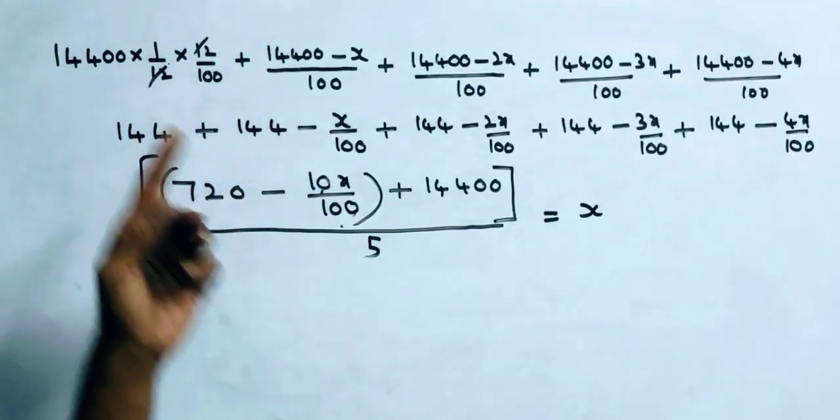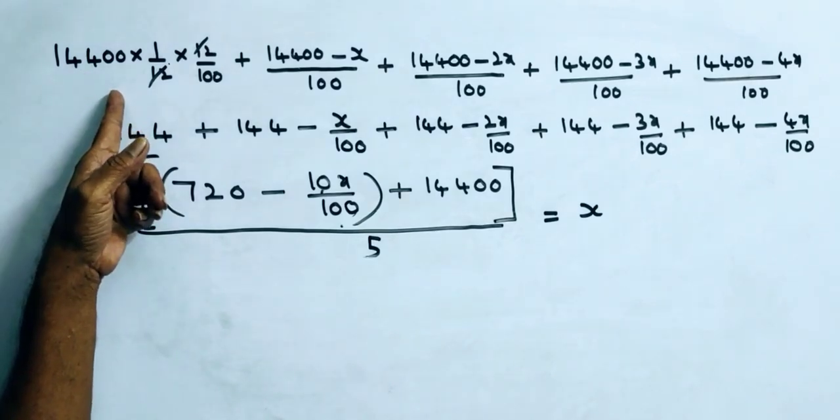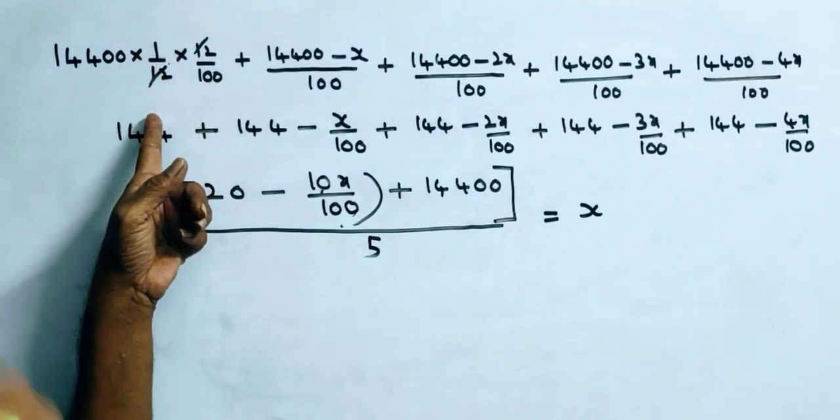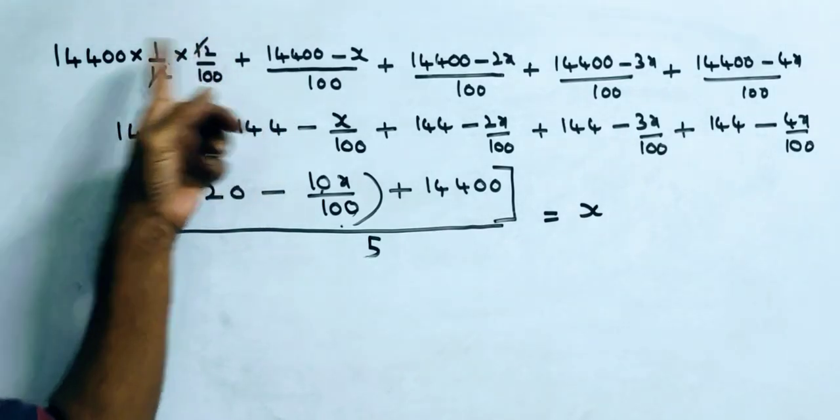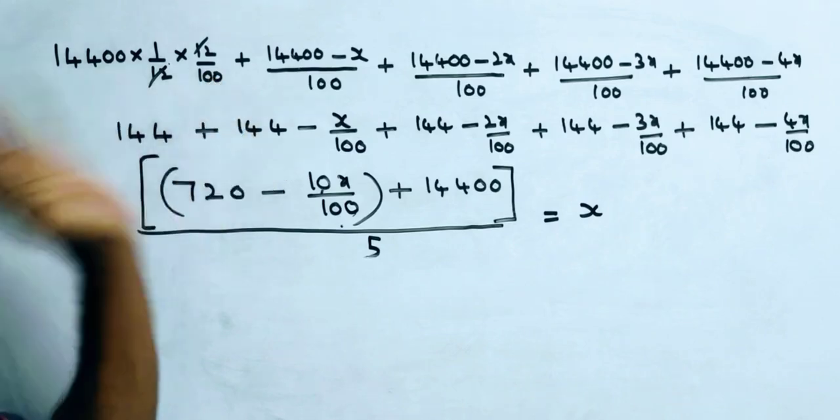PTR by 100: P = 14,400, T = 1/12 for one month, R = 12/100. So this equals 14,400 divided by 100. This is the interest for the first month.